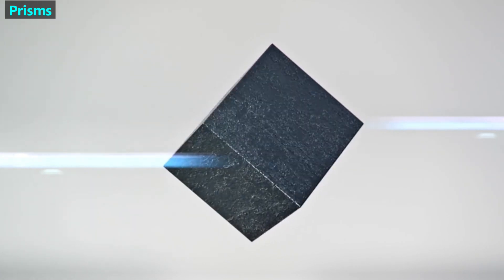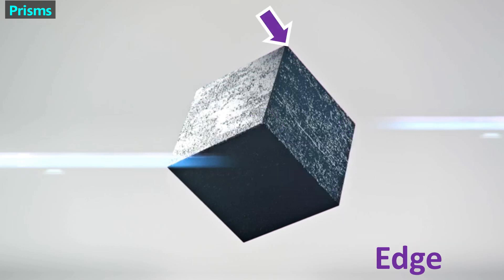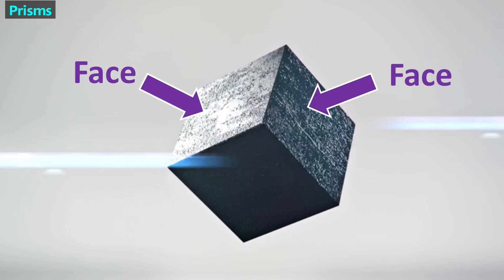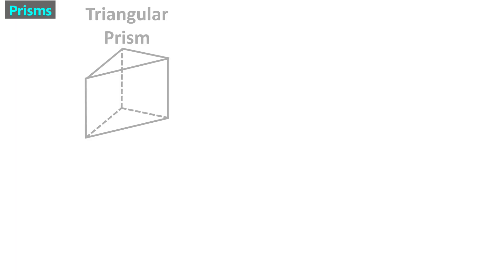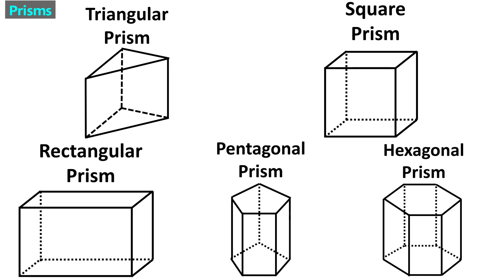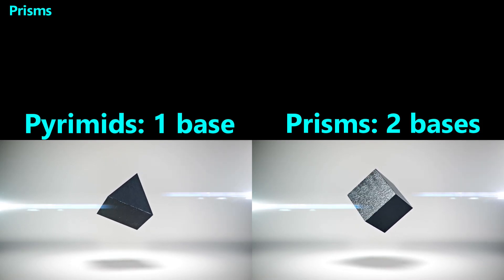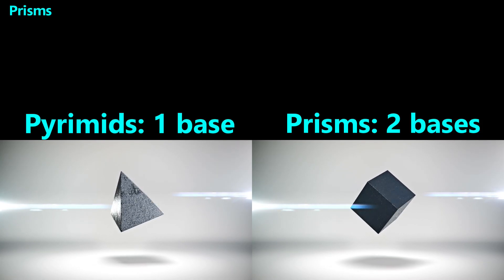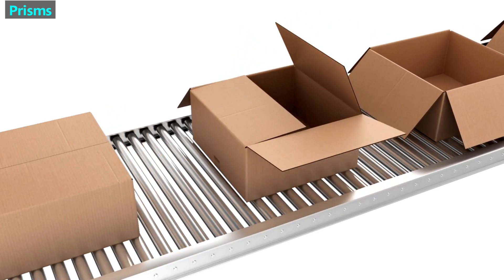As with pyramids and cones, we use the word vertex to refer to the sharp points on a prism — a prism has lots of vertices. Just like with the pyramid, we use the word edge to refer to the lines between the vertices, and we use the word face to refer to the flat surfaces of a prism. The base is also a face. Please note that unlike pyramids, prisms have two bases, not one. The bases on a given prism are the same shape and are located opposite from each other.